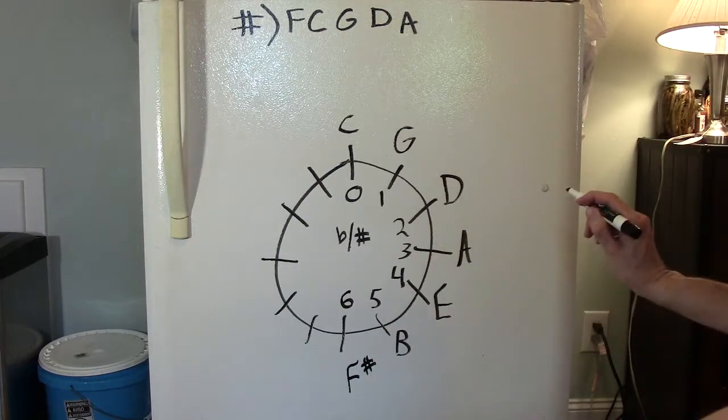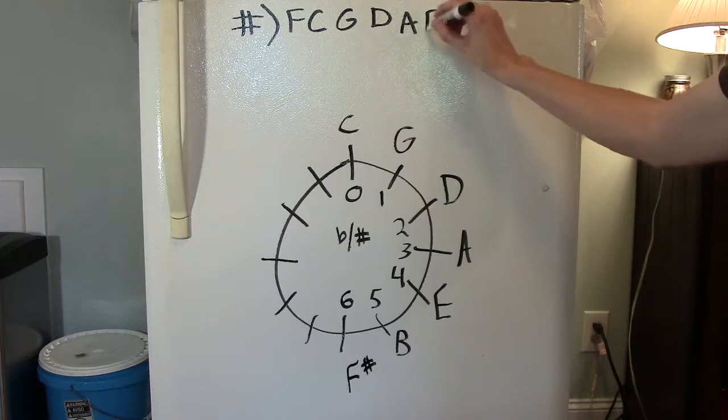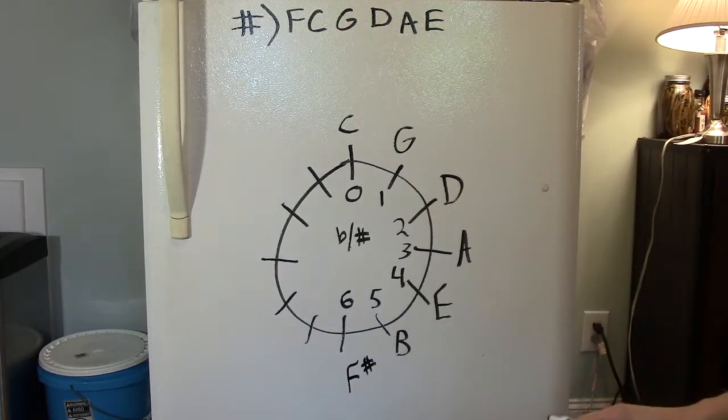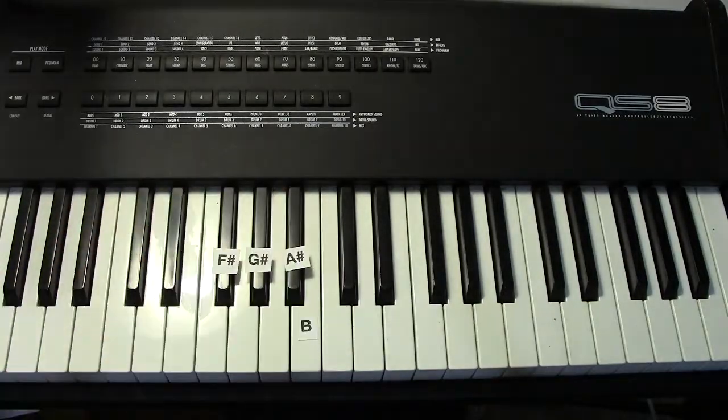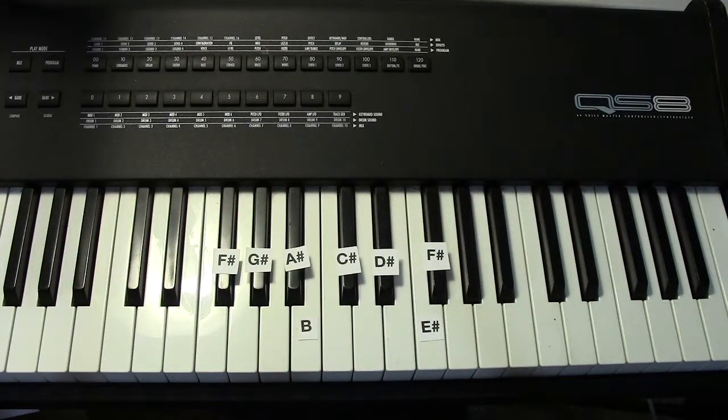F sharp major has six sharps. They are F, C, G, D, A, and E. F sharp, G sharp, A sharp, C sharp, D sharp, E sharp. That's a lot of sharps.